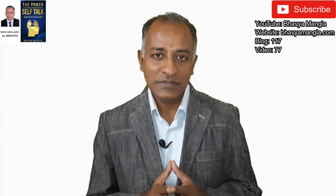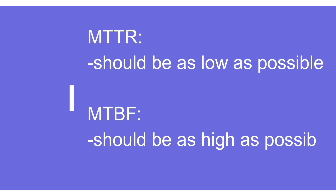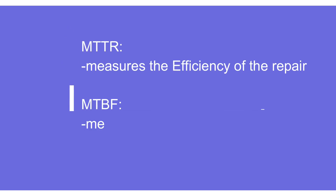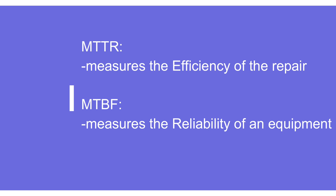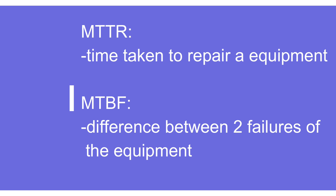Now for the key differences: MTTR should be as low as possible, while MTBF should be as high as possible. MTTR talks about the efficiency of the repair process, whereas MTBF talks about the reliability of the equipment — how much we can rely on a particular piece of equipment. MTTR measures the time taken to repair a particular equipment, while MTBF measures the time between two different failures.